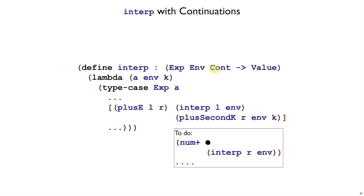k stands for the continuation. Interp now takes an expression, an environment, and a continuation. When it's able to finally add the two numbers in this numplus, it should deliver that value to the rest of the continuation. Those are the dots down here. So we put the corresponding k over there in plus second k.